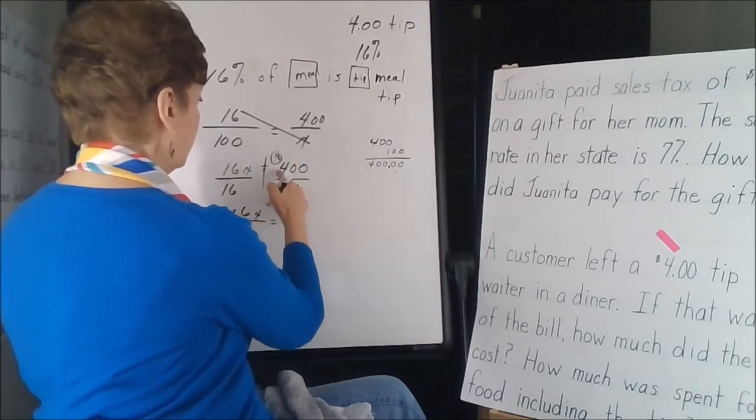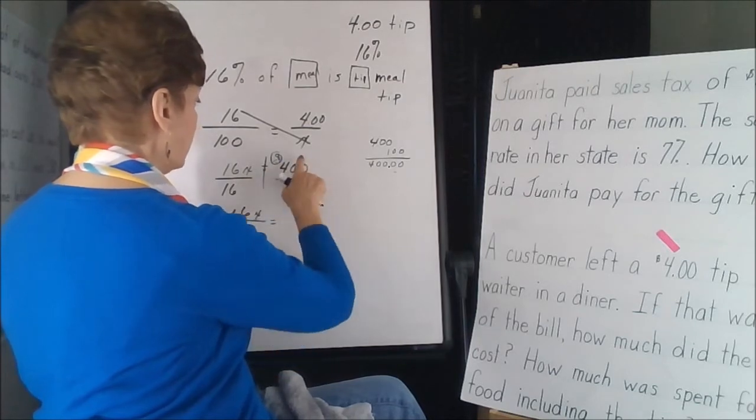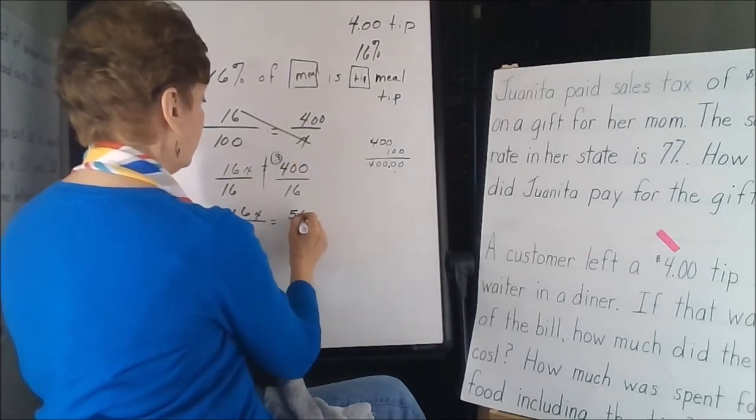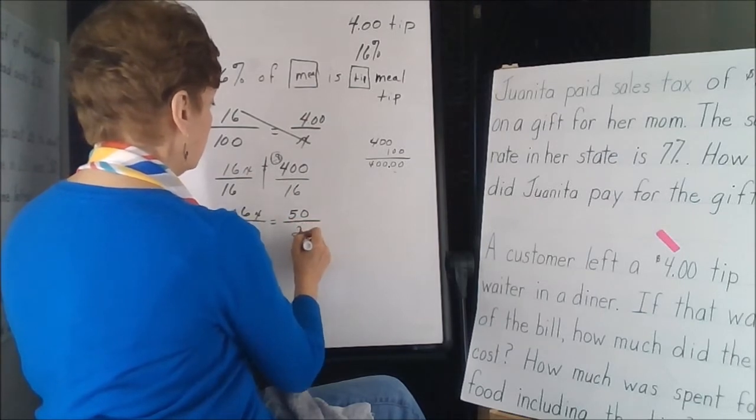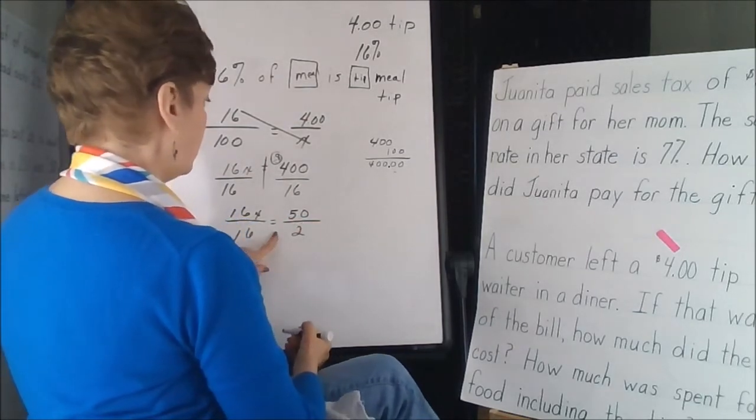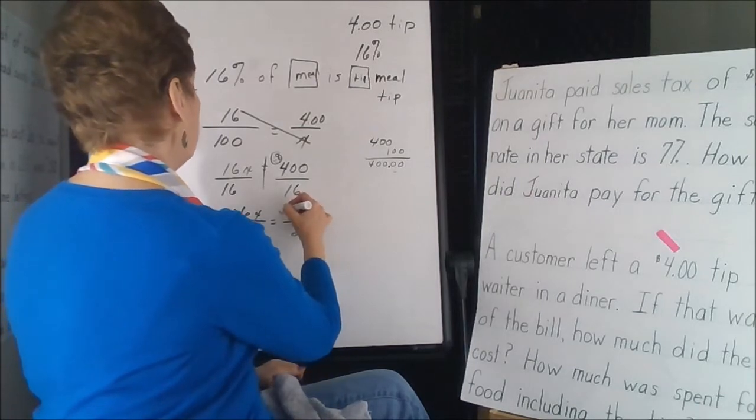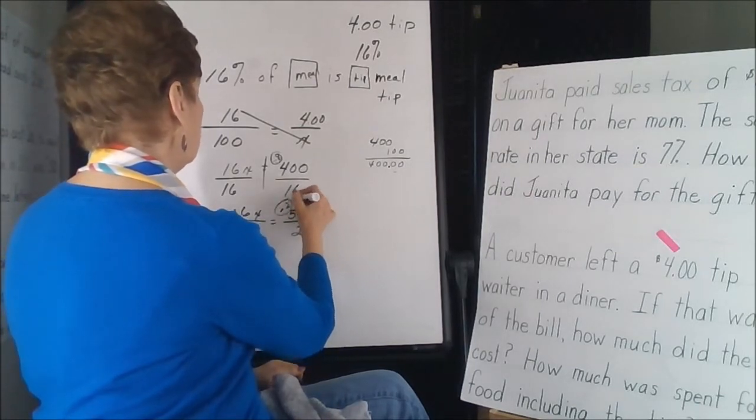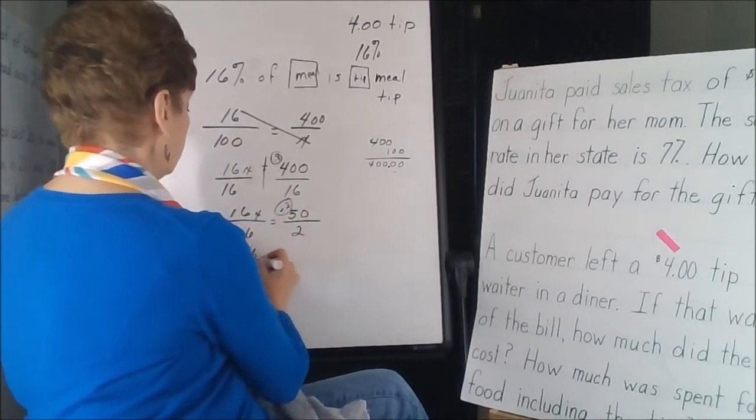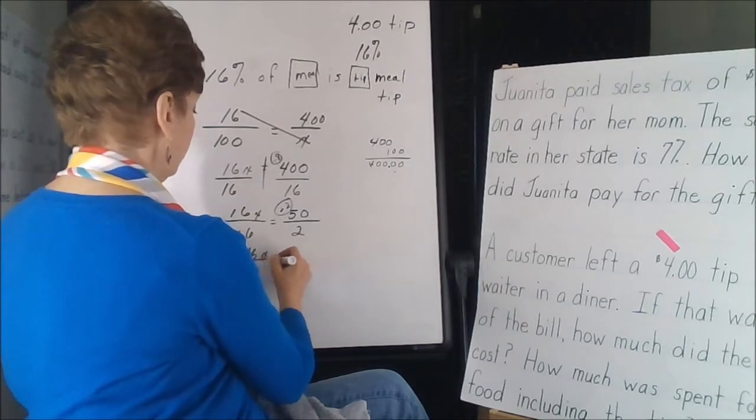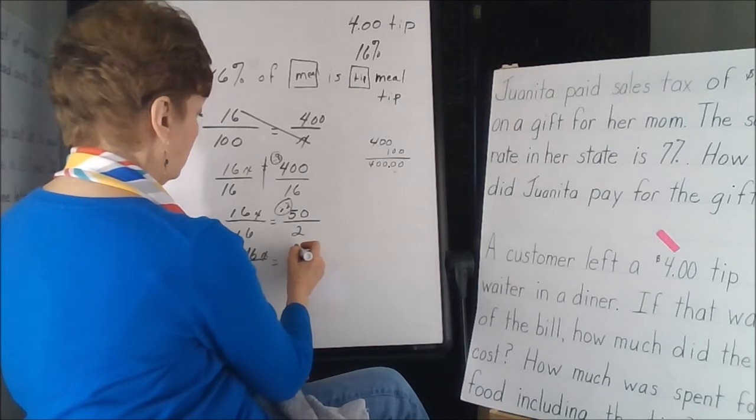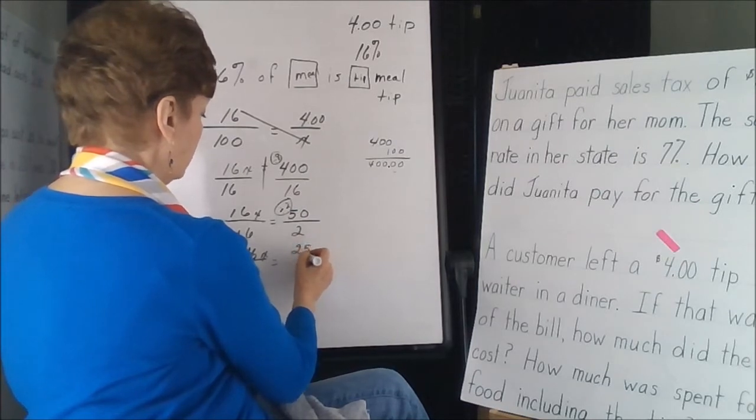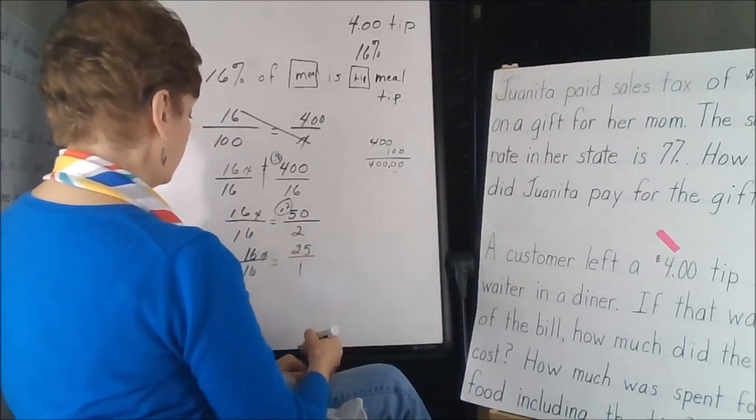8 divides into 400. 8 divides into 40, 5 times, and then a 0. 8 divides into 16, twice. We can do some more here. We can divide this by 2. So this is all a copy job. 2 divides into 50, 25 times, and 2 goes in once.